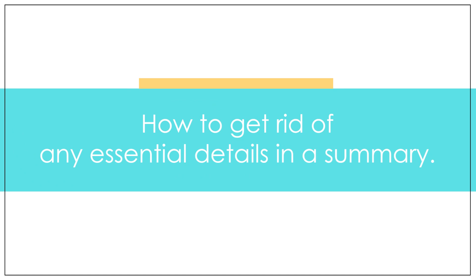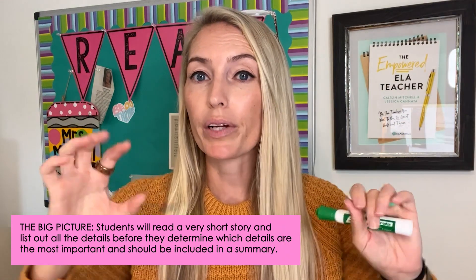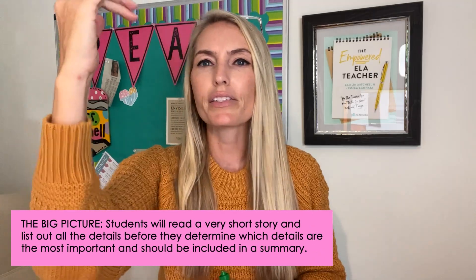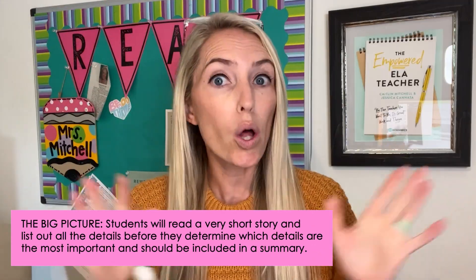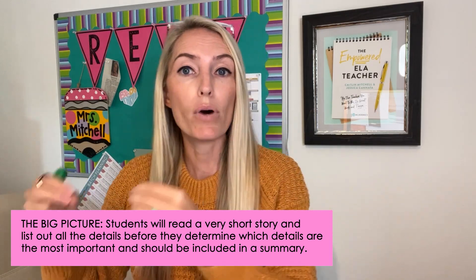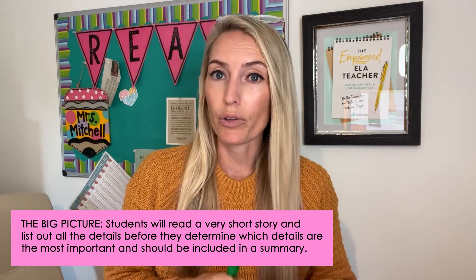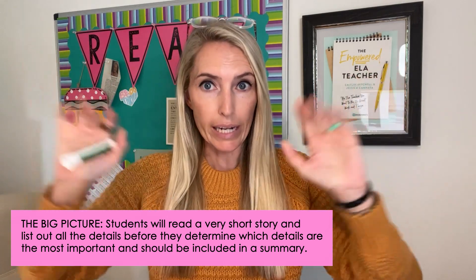After you model how to get rid of any essential details in a summary, which is exactly what we're going to talk about in this video, at the end of this activity you will review the SWBST — Somebody Wanted But So Then — summary method. That way your students can put these new skills into action. Big picture: students are going to read a very short story, list out all of the details, and then determine which details are the most important ones to include in a summary.